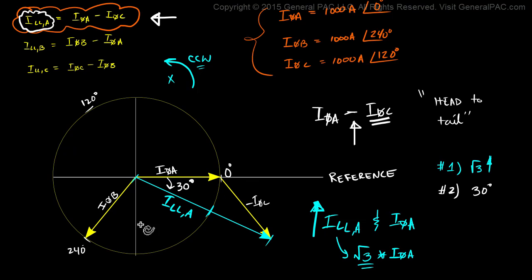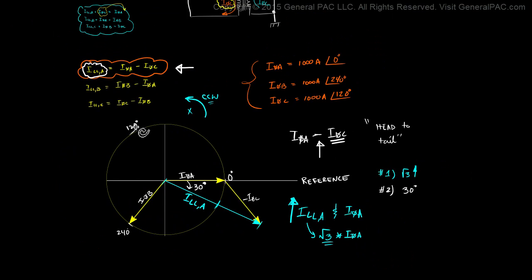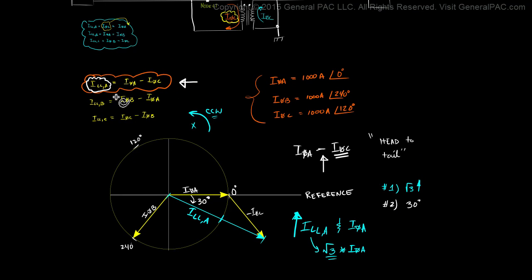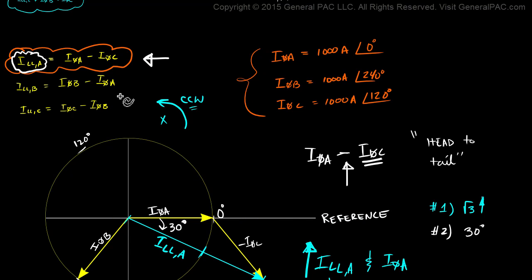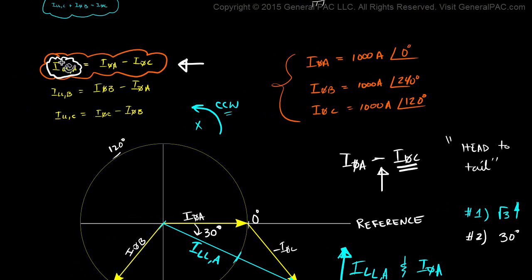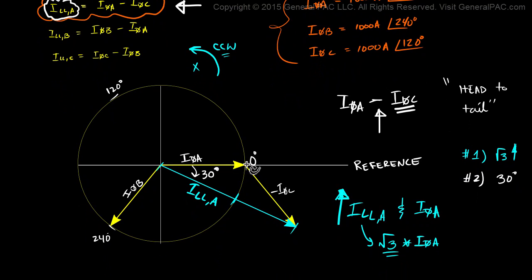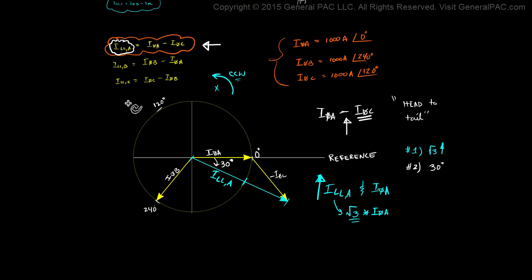Before we conclude, when I was first learning this, this particular phasor analysis was very complicated. So let's take a step back and walk through this step by step. What we're actually doing with this phasor analysis is computing this particular equation: if we subtract phase current A minus phase current C, we get line current A. We took phase current A, subtracted phase current C, and what we got is line current A. Comparing phase current A with line current A, we see that the line current is a lot larger than our phase current — and not only is it larger, but it also has a 30 degrees phase shift.